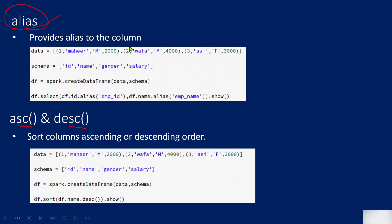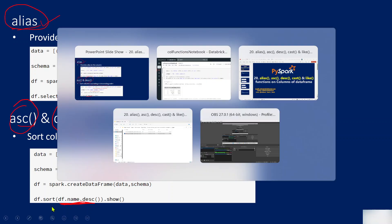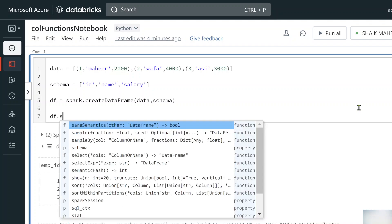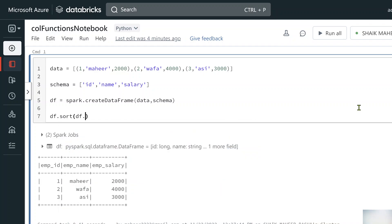Next let's discuss ascending and descending functions. As the names imply, they help you sort columns in ascending or descending order. On top of the DataFrame, I use the sort function passing the name column with asc() to sort in ascending order, then show the result.